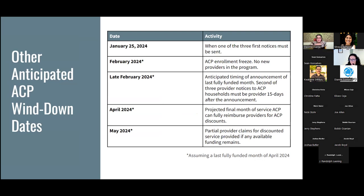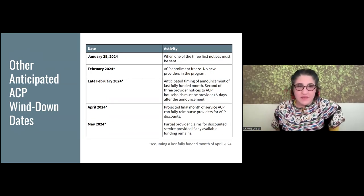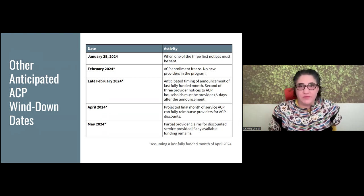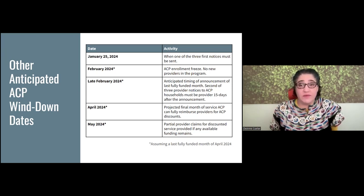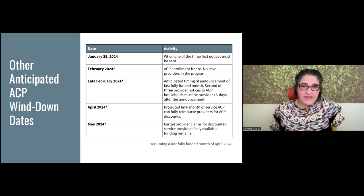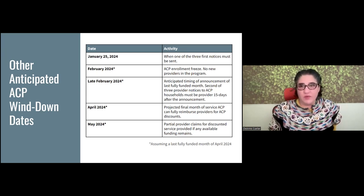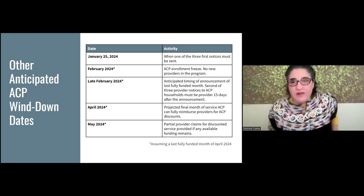Here are some other anticipated ACP wind-down dates — almost all are starred because this assumes a last fully-funded month of April 2024. Quick highlights: January 25th is the first of the three notices Sean mentioned, the first notice going out to the public. And then you have late February with anticipated timing, taking us all the way up to May. The May date is important to note because if people are still enrolling as new ACP participants and there is any funding remaining, then the partial provider claims for discounted service would be able to fund some or all, depending on how much money is available.